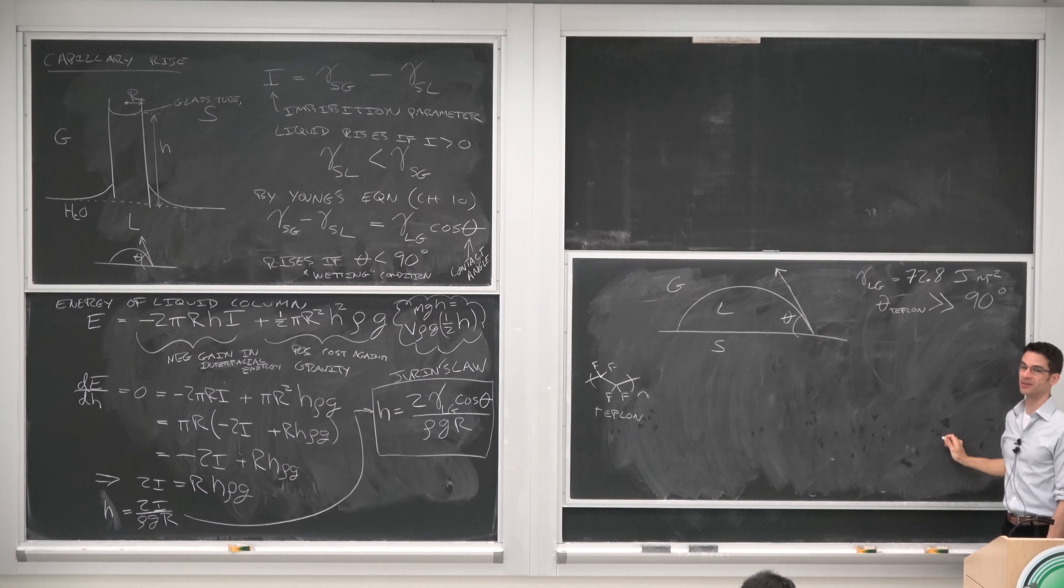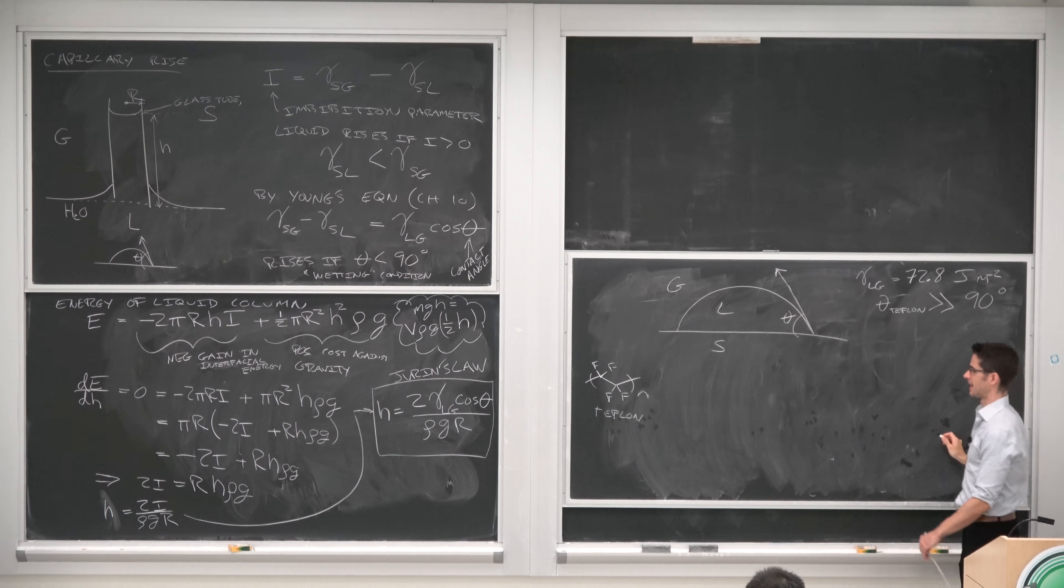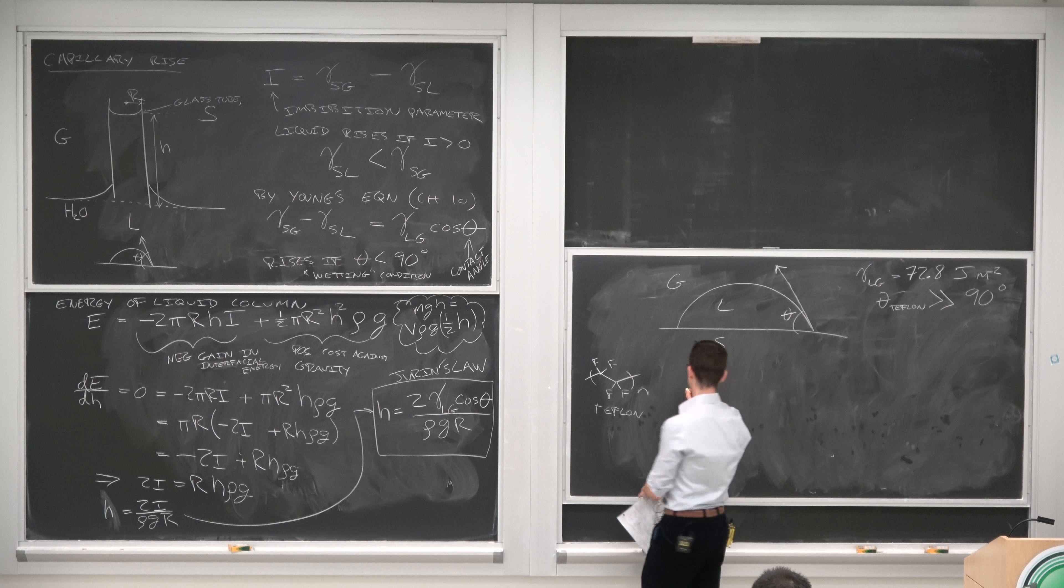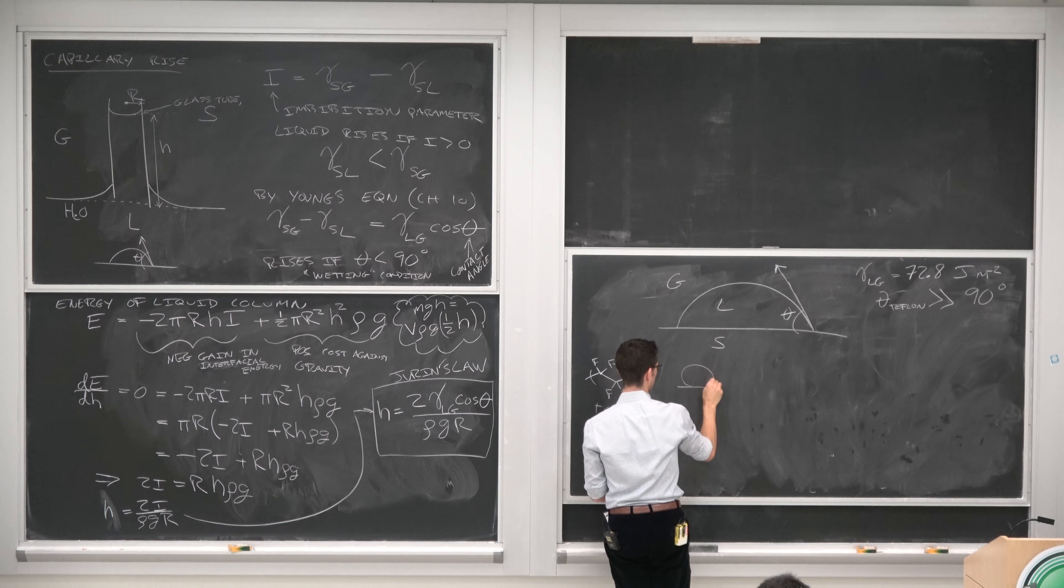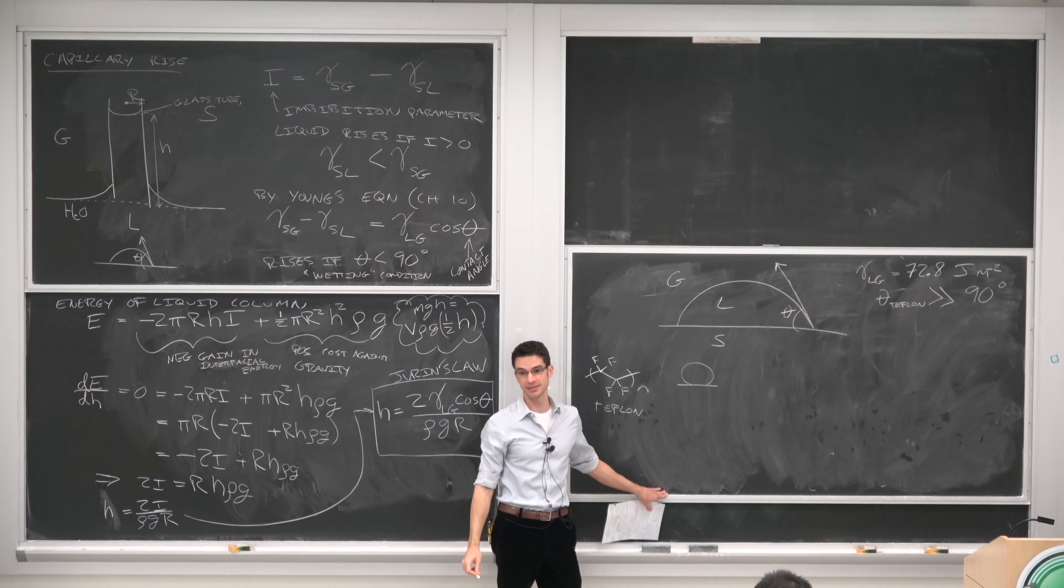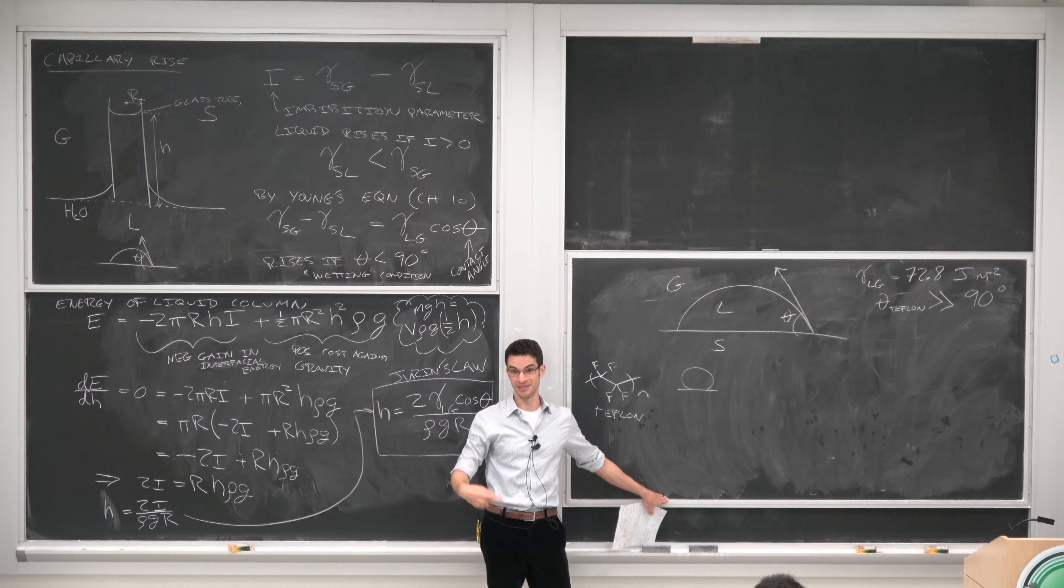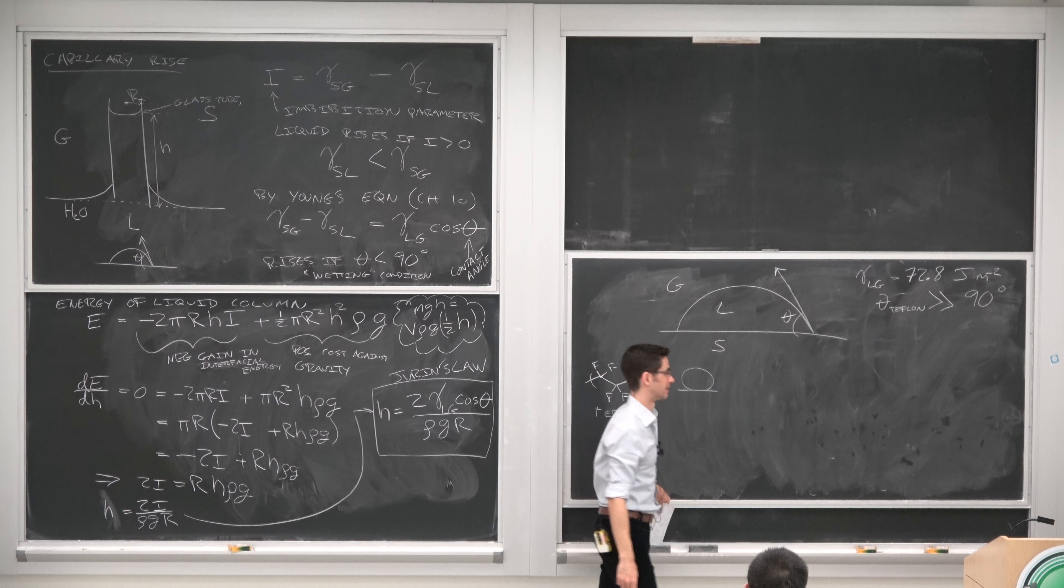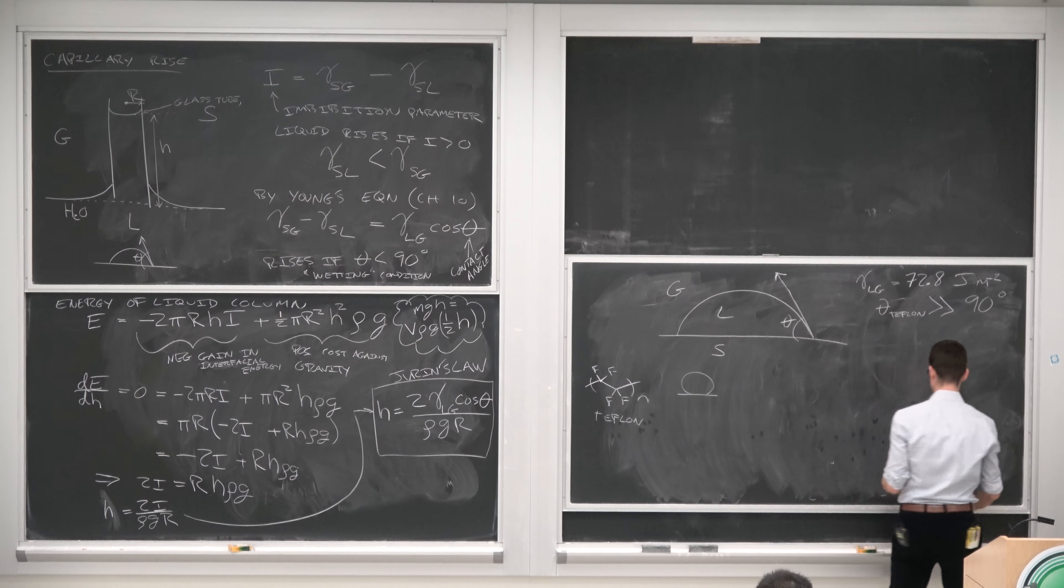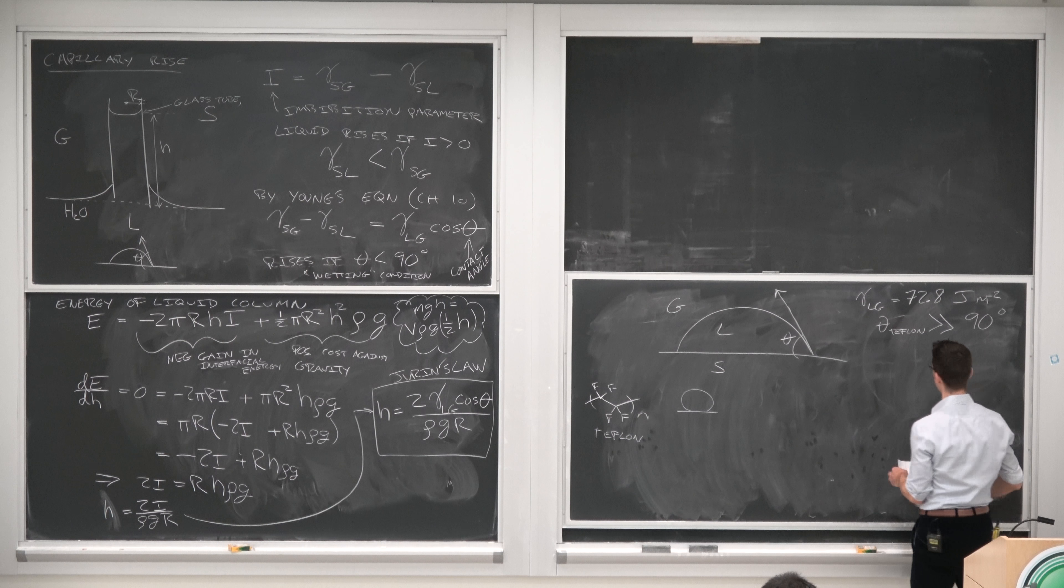It's definitely going to be greater than 90 degrees. You're definitely going to have a situation where, on Teflon, water will look like this. Basically, you'll turn water into mercury by changing the substrate to something that's not wet easily.